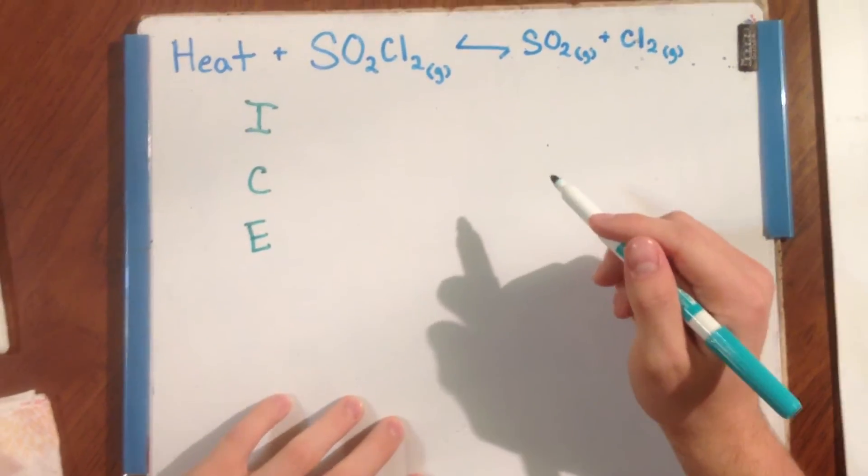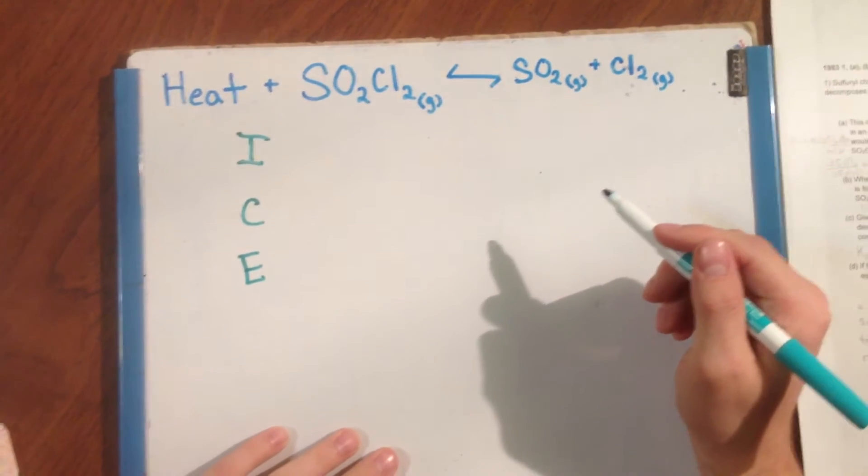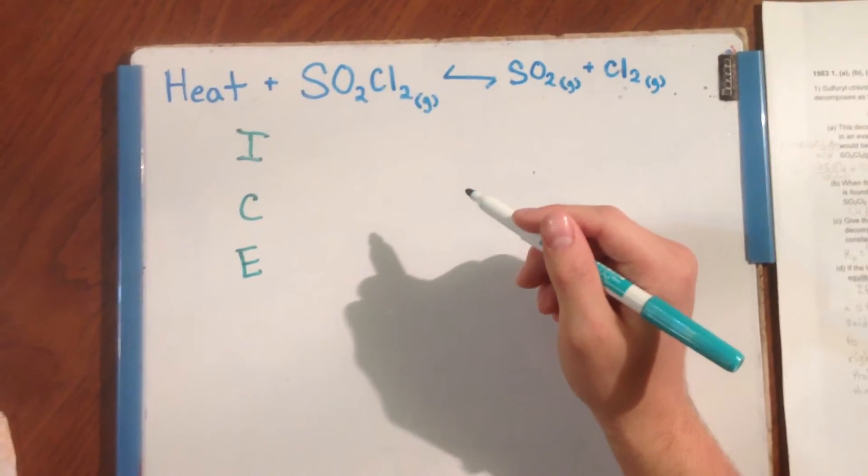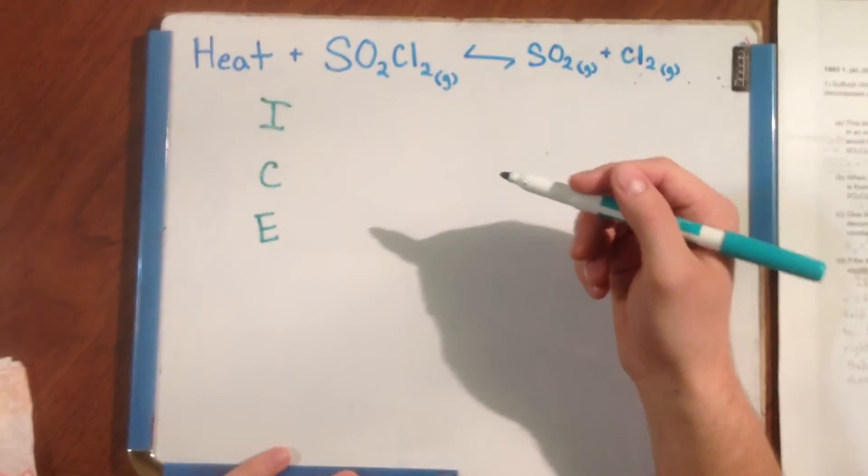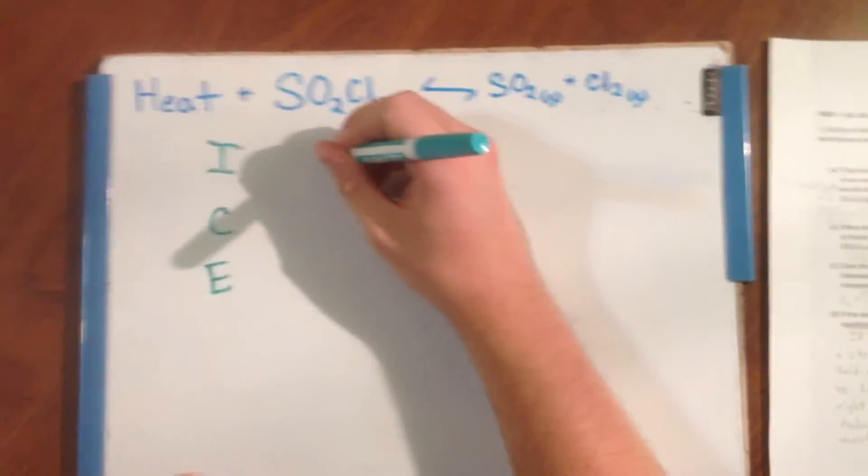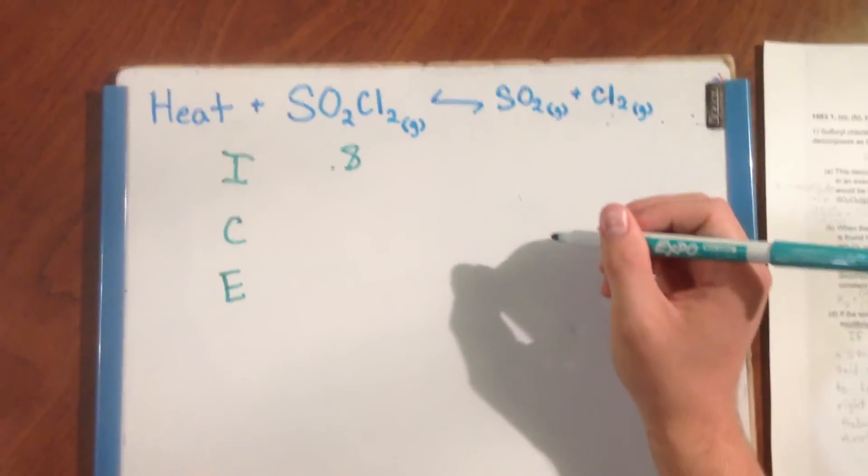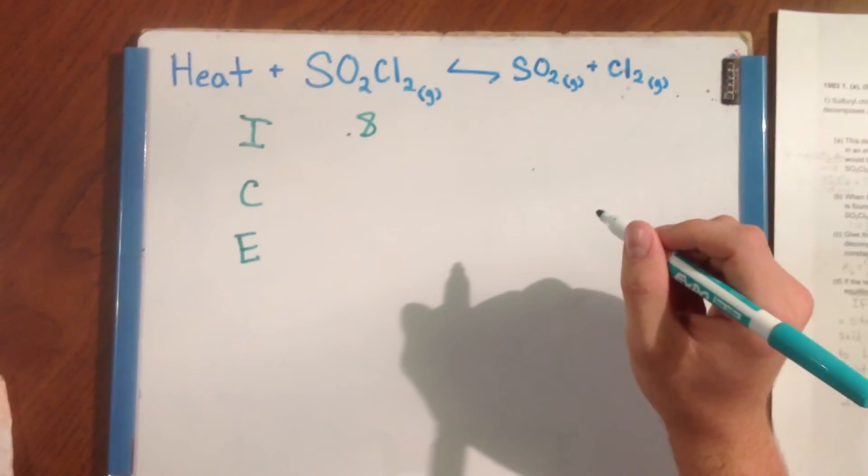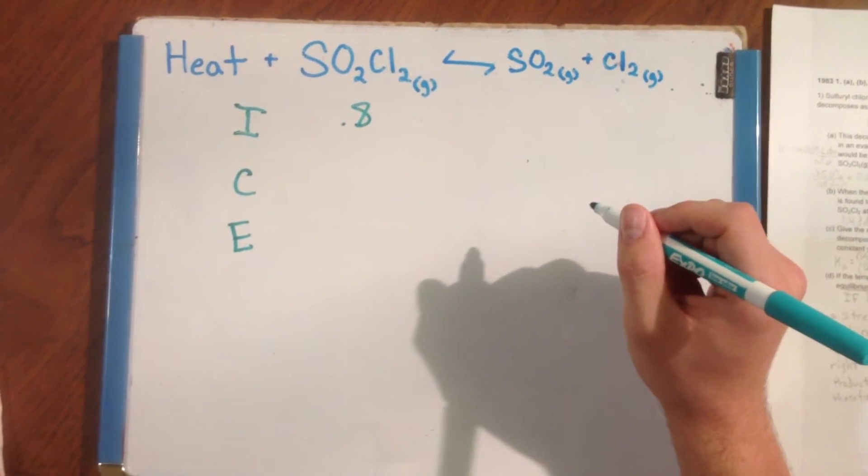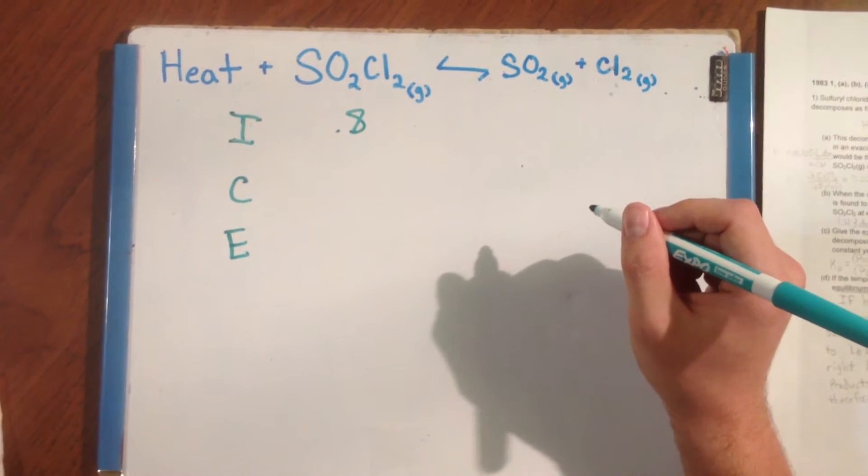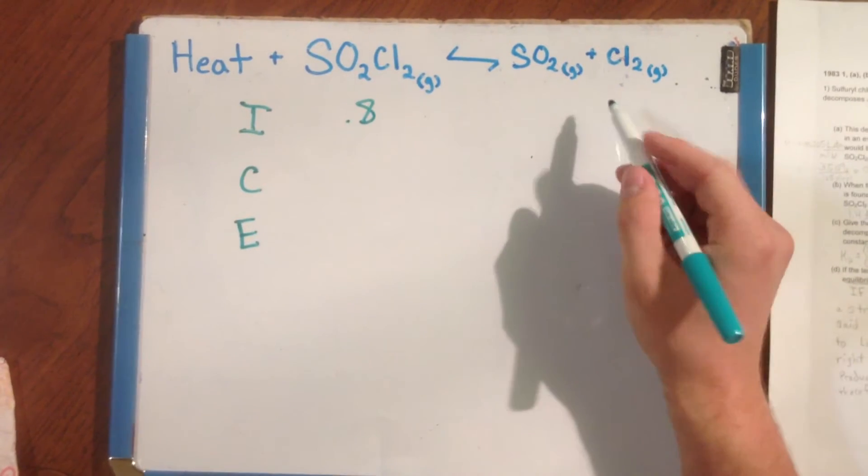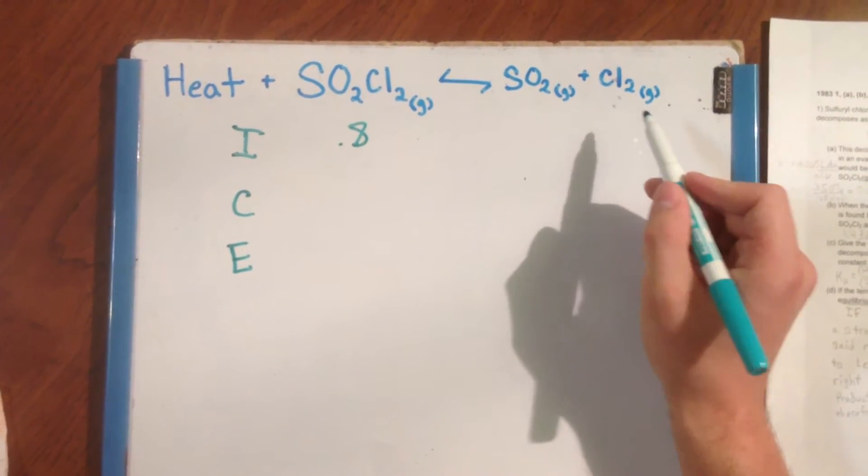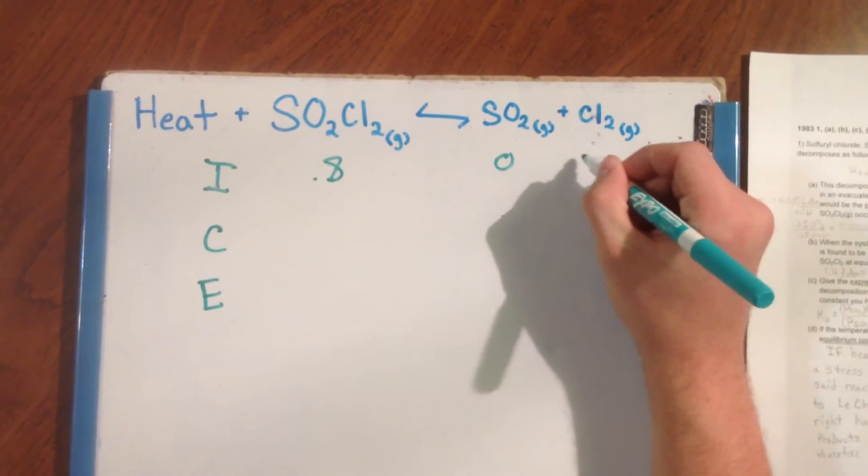So to fill the chart out, we start by inserting the pressures for the beginning of the reaction. Initially, we calculated 0.88 atm SO2Cl2 gas. And since no dissociation occurred at this point, there is no SO2 gas or Cl2 gas. And therefore, they exert no pressure.